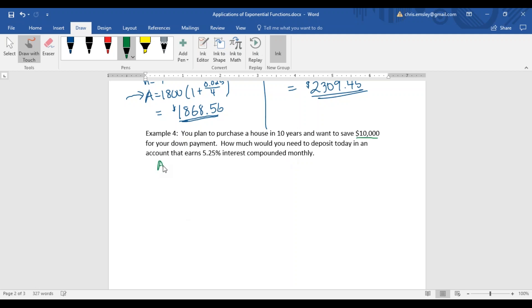This time, what we know is not P, it's A. We know the future value - we want to end up with $10,000. They're asking us how much we are starting with, so that's what we're going to end up solving for. Our interest rate is 5.25% or 0.0525. Our time is 10 years. And n is the number of compounding periods in a year since interest is compounded monthly, n is 12.